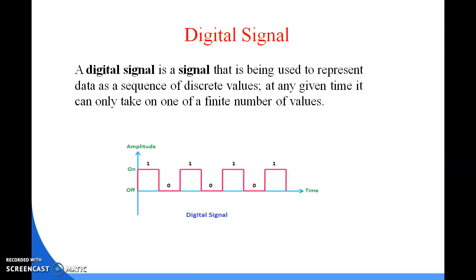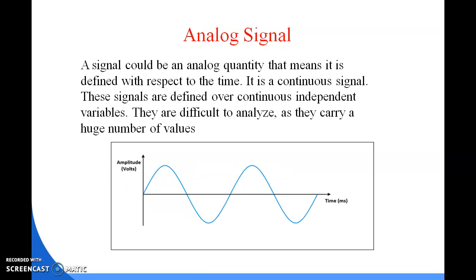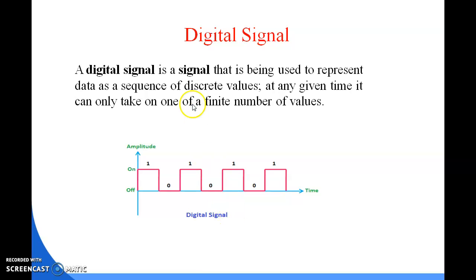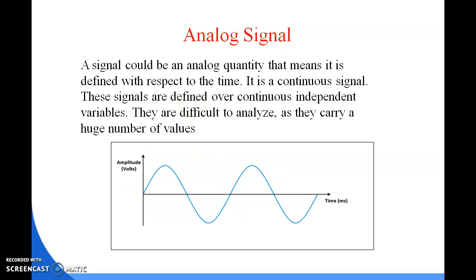There are some important terms related to signals. Period refers to the amount of time in seconds a signal needs to complete one cycle. Looking at the analog signal, from this point to this point is one cycle. The time required to complete one cycle is known as the period.